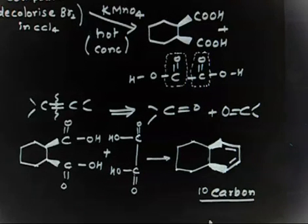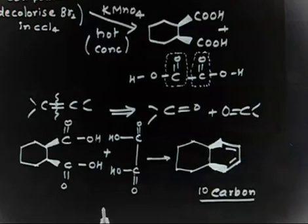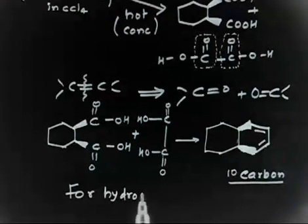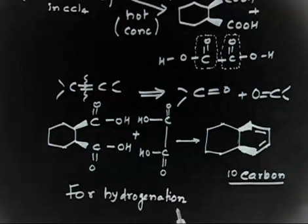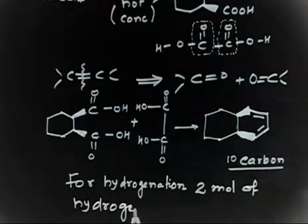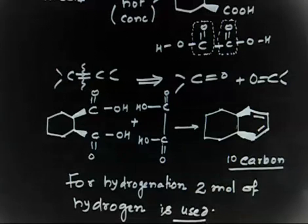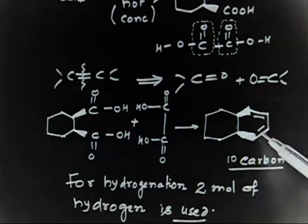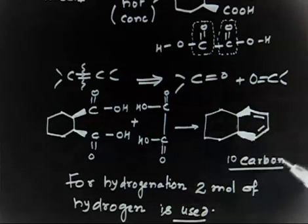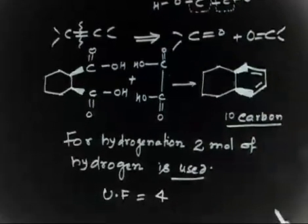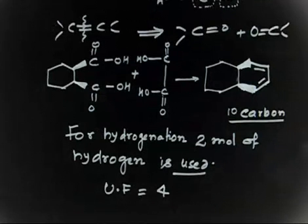One can ask: how many moles of hydrogen are used in hydrogenation? Since there are two double bonds, two moles of hydrogen are used. Now, what is the unsaturation for this compound? Someone might say two, but that is not correct. The total unsaturation factor is four: two from the double bonds and one from each of the two rings. So the total unsaturation factor is four, and the unsaturation due to double bonds alone is two.